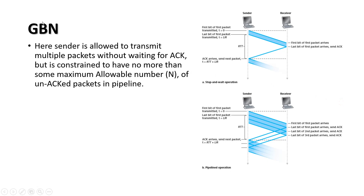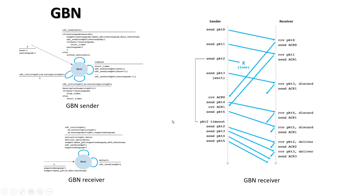In Go-Back-N (GBN), the sender is allowed to transmit multiple packets without waiting for an ACK. Unlike stop-and-wait where one packet is sent and acknowledged before the next, in GBN multiple packets are sent together. For example, where only one packet is sent in one RTT with stop-and-wait, here three packets can be sent — this is the advantage of GBN.